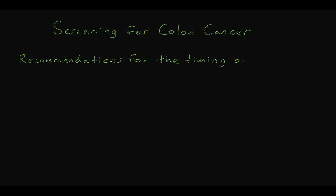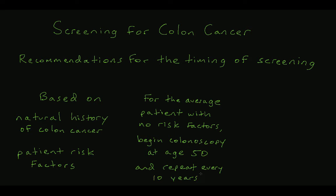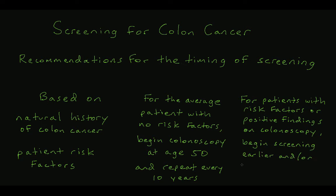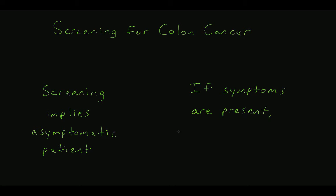Recommendations for the timing of screening for colon cancer are based on the natural history of colon cancer and patient risk factors. Different societies offer slightly different recommendations. The American Cancer Society, the United States Preventive Services Task Force, and the American College of Gastroenterology are some of the more well-known organizations. In general, for a patient with no risk factors, screening for men and women should begin with a colonoscopy at age 50 and repeat every 10 years thereafter. The presence of risk factors and/or positive findings on a colonoscopy, such as polyps, will push the start time to an earlier age and/or increase the frequency of repeat screening. These recommendations apply to screening colonoscopies, implying that the patient is asymptomatic. The presence of any suspicious symptoms for colon cancer — iron deficiency anemia or narrow caliber stools, for instance — should prompt an order for an immediate diagnostic colonoscopy.